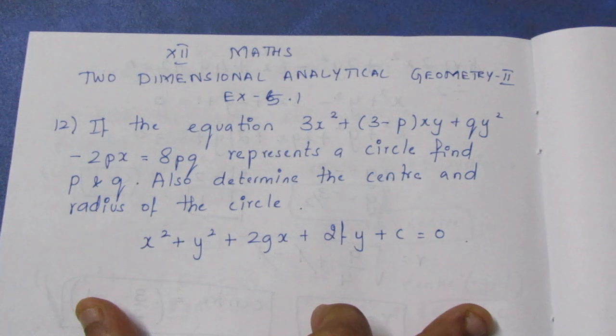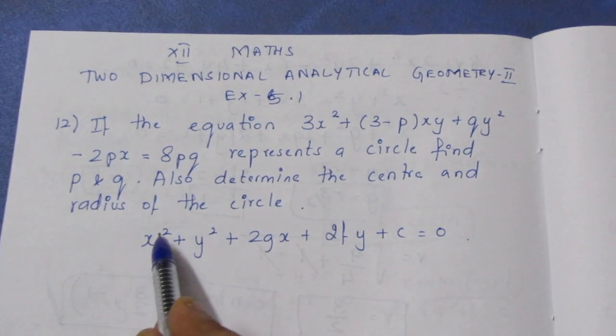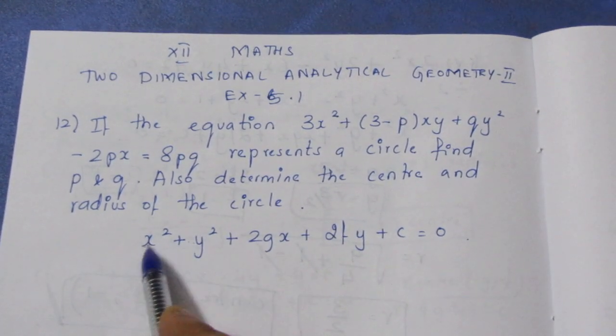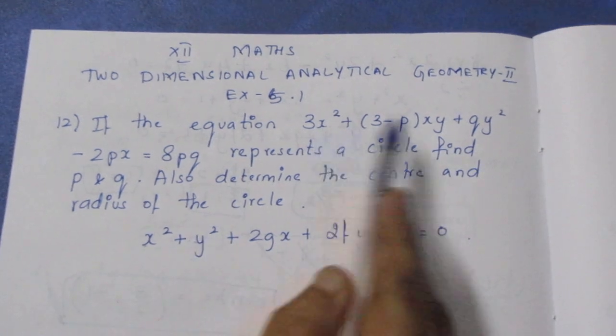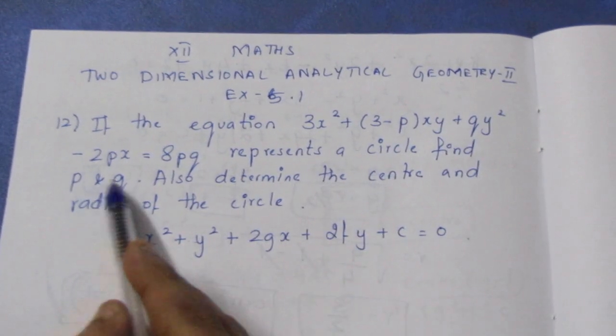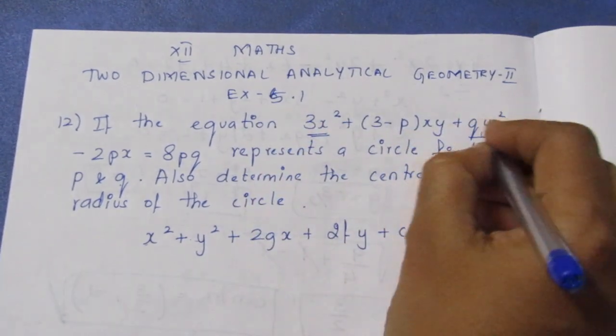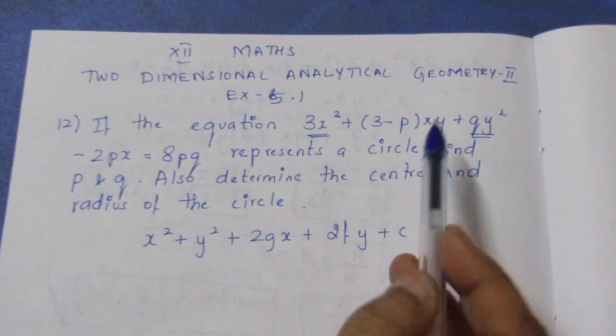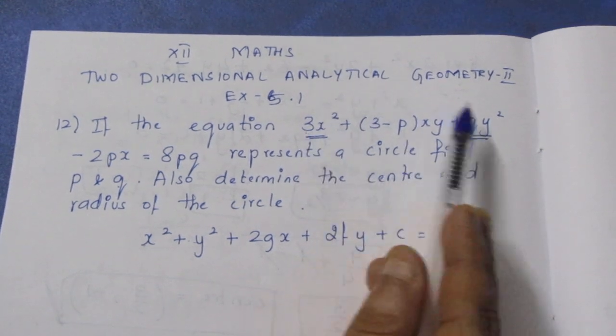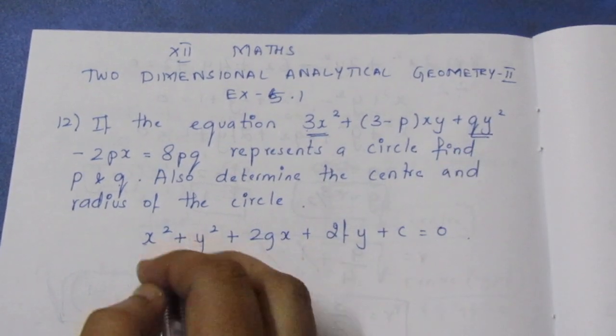For the general form of a circle, the coefficient of x² and the coefficient of y² must be equal. What does this tell us? First, we know that the coefficient of x² is equal to the coefficient of y².